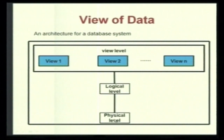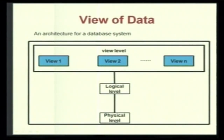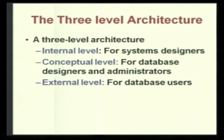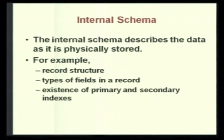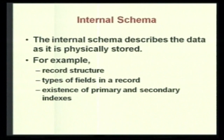Data is stored at three levels: the physical level (also called the internal level), the logical level (also called the conceptual level), and the view level (also called the external level). The internal schema describes the data as it is physically stored — the record structure, types of fields in a record, and the existence of primary and secondary indexes. It deals with the physical storage of data: structure of records, files, pages, blocks, how data is divided into blocks, what indexes are chosen, and how records are ordered. This is used by database system programmers.